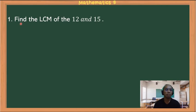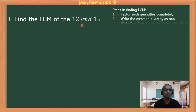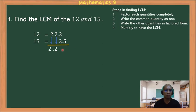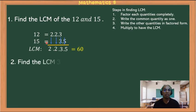Example 1: find the LCM of 12 and 15. The prime factors of 12 are 2 × 2 × 3, and the prime factors of 15 are 3 × 5. Align the common factors — the common factor 3 is written as 1. Bring down the remaining factors: 2, 2, and 5. Multiplying them: 2 × 2 = 4, 4 × 3 = 12, 12 × 5 = 60. Therefore, 60 is the LCM of 12 and 15.